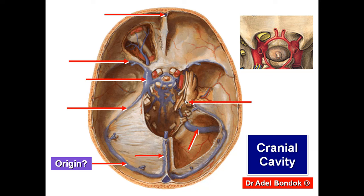This is the sensory root of the trigeminal nerve. This is the trigeminal ganglion, which gives the three branches: the ophthalmic nerve, the maxillary nerve, and the mandibular nerve.